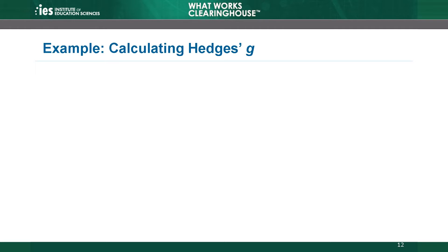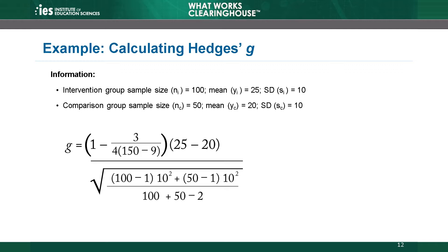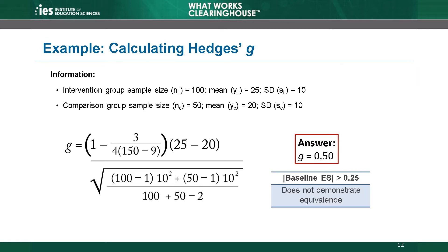Let's walk through an example of how to calculate equivalence for a continuous variable. In this example, we have the sample sizes, means, and standard deviations on a continuous measure for an analytic sample at baseline. The mean in the intervention group is 25 and the mean in the comparison group is 20. The standard deviation is 10 in both groups. Plugging these numbers into the Hedges G equation, we find that Hedges G is 0.5 standard deviations. This means that the intervention group average at the pretest is one half of a standard deviation larger than that of the comparison group. On this measure, the groups do not demonstrate equivalence at baseline, as the effect size is greater than 0.25 standard deviations.